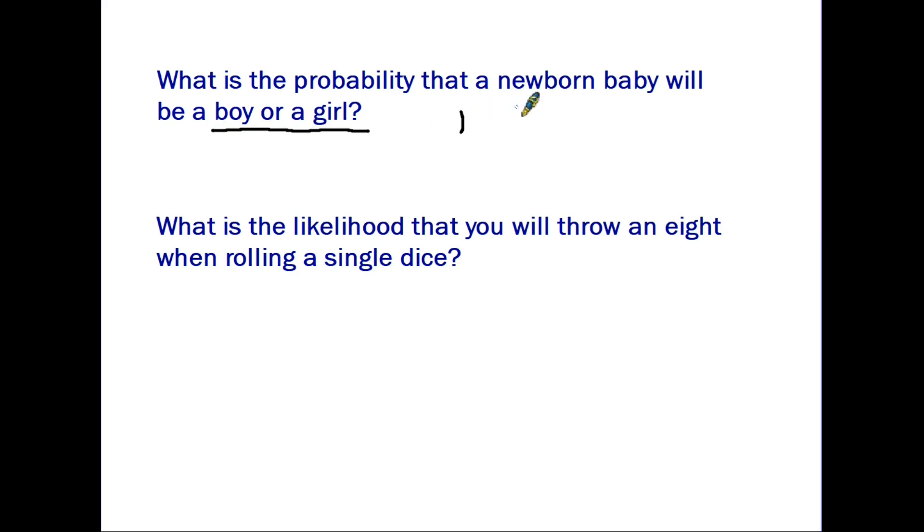If the question had said what's the probability a baby will be a boy? Well then you've got a half. One out of two. It can be a boy or a girl. So the chances of it being boy is a half. But the chances of it being either a boy or a girl is one.